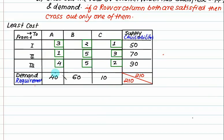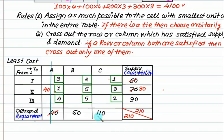In this problem, the least cost is 1 — here and here. Since it's 40, I will allocate 40. This is exhausted, and 30 is left on this side. Cancel out the column first. This time demand equals 110, 30, 50. Can we allocate 50? Yes, allocate 50. Cancel out — 60 is left. Cancel out the first row.